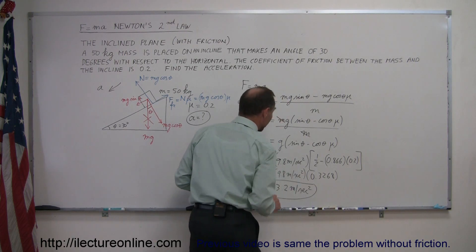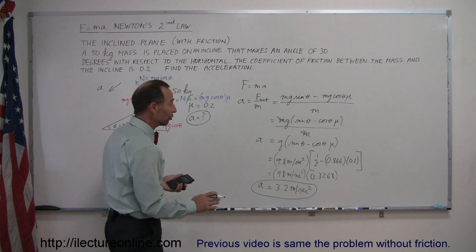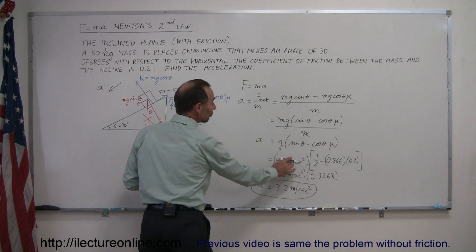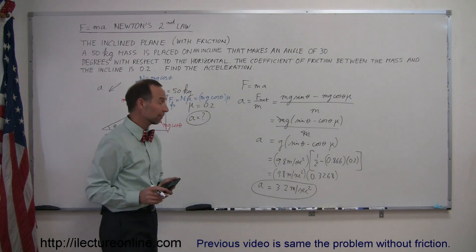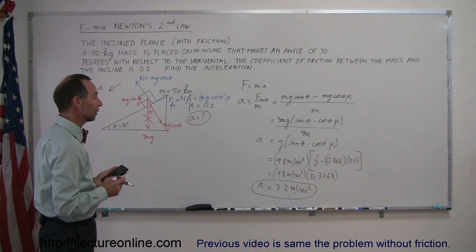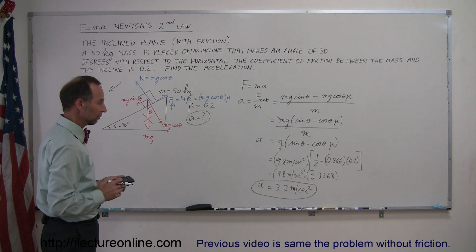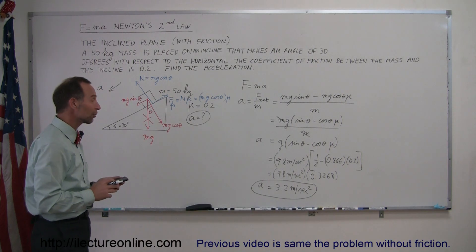Now, why did I leave it with just two significant figures? Because I used the number 9.8, I only had two significant figures, so your answer should also only have two significant figures, so the acceleration in this case is 3.2 meters per second squared.